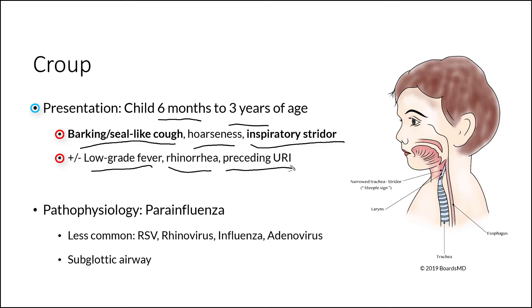The pathophysiology of this condition is typically going to be parainfluenza. However, other less common causes of croup include RSV, rhinovirus, influenza, and adenovirus.